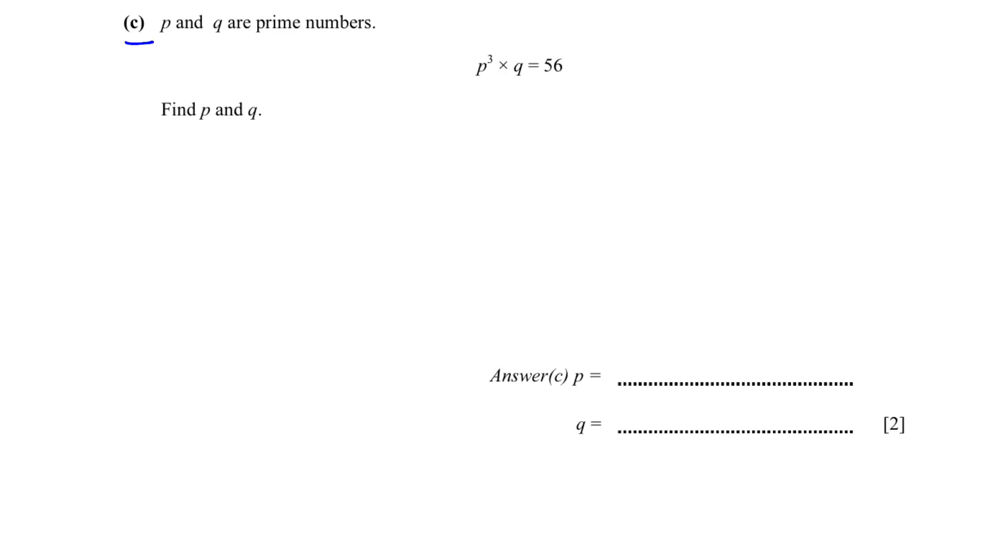C. P and Q are prime numbers. P cubed times Q is 56. This is not a very difficult question. Try to write down the factors of 56 and see which has a prime number in it. You will see that 8 times 7 is 56. 7 is a prime number. 8 can be written as 2 cube. So 2 cube multiplied by 7 is 56. P is 2 and Q is 7.